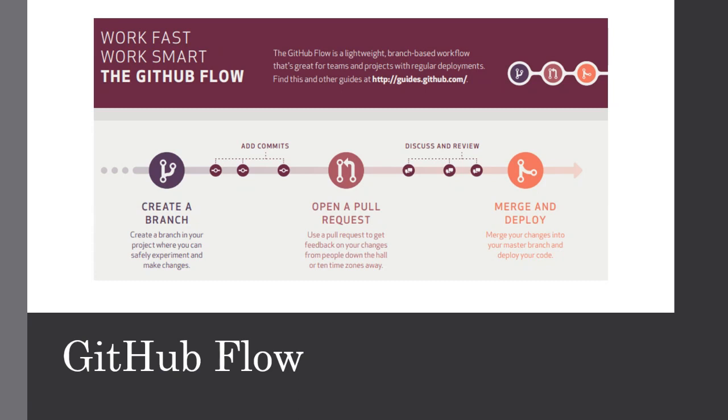Creating that branch becomes your own private workspace. You commit to it often, then you want it to go back into the main branch — the mainstream you're going to push to production. In GitHub flow, the idea is to create something called a pull request, which collects all those commits for that branch and presents to users in GitHub what you want to commit to the main branch.